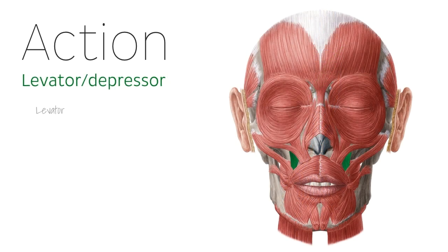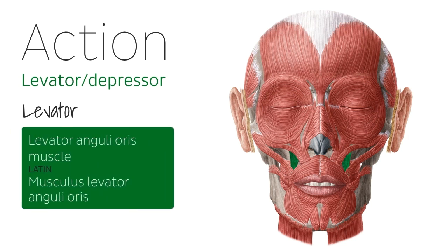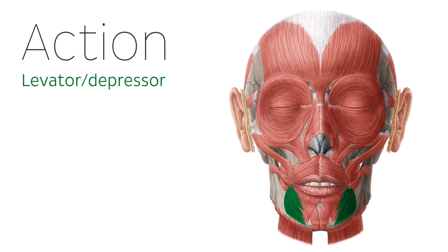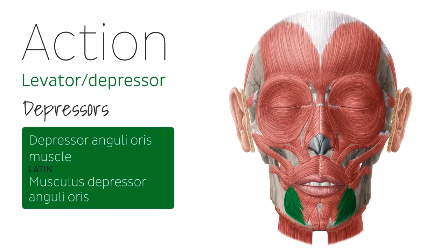The term levator is used to describe muscles that perform a lifting action. For example, the levator anguli oris muscle lifts or elevates the angle of the mouth when we smile. The next group of muscles are the depressors. The term depressor is used to describe a muscle that carries out the opposite action of levator muscles, which is depression or pulling downward. For example, when we make a sad face, the depressor anguli oris muscles are responsible for pulling the angles of the mouth downward.